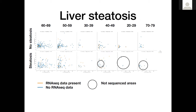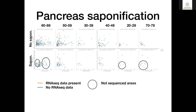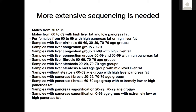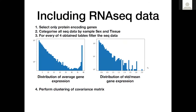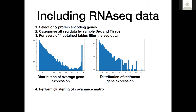We can also look at pancreas steatosis, pancreas fibrosis, and pancreas saponification. Here is the list of all groups which may be looked at for further sequencing. The small dataset with sequences is just about 100 rows, which is very little to understand correlations with RNA-seq.